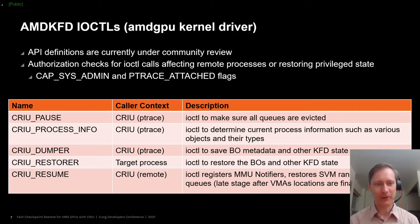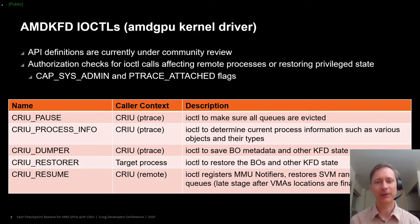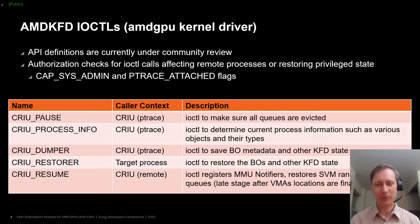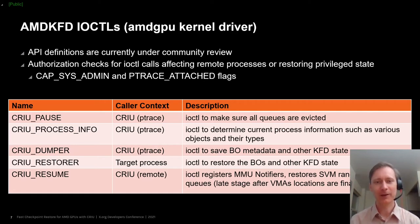The first three IOCTLs — pause, process_info, and dumper — are all used during the checkpoint stage. The pause IOCTL makes sure that execution of the user mode queues is stopped — or as we call it, the queues are evicted — ensuring that the snapshot we create after that is consistent and static, so we're not trying to save something that's still changing as the GPU is executing. This pause IOCTL supports both stopping execution and also resuming it, because CRIU can optionally let the application continue running after it's taken the snapshot. Process_info returns information to user mode about what types of objects exist, how many, and what memory size is needed — how many buffer objects, how big they are, how many queues, how many SVM virtual address ranges, and so on.